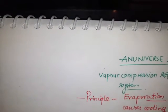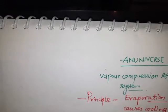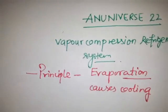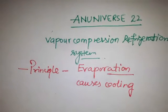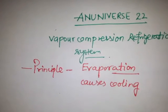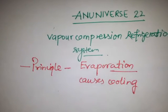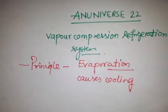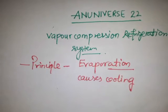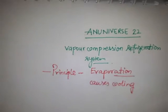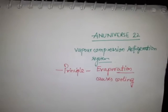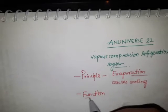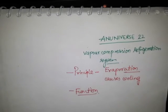Whenever evaporation takes place of a liquid, it gives a cooling effect. For example, in the refrigeration machine as we see in our homes, the liquid is evaporated in a part that is called the evaporator, and during evaporation the liquid takes the latent heat from the substance to be cooled and produces cooling.